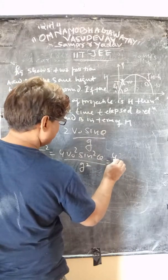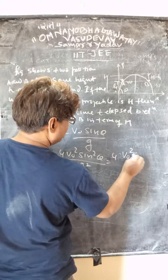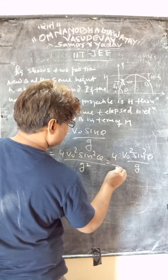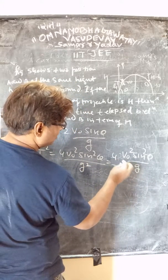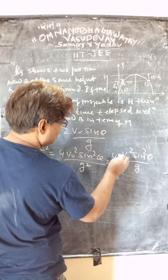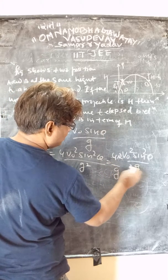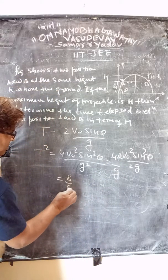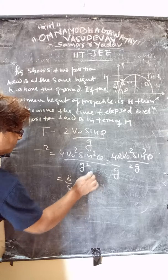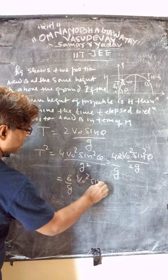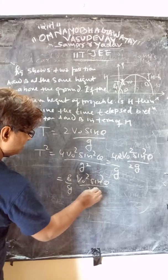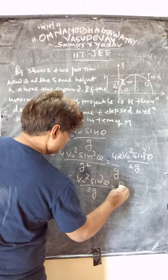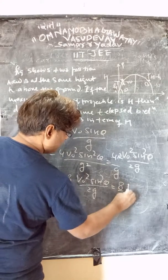We can write this as 4 into V0 squared sin squared theta upon g, divided by g. Now we multiply and divide by 2, giving us 8 upon g into (V0 squared sin squared theta upon 2g). This expression inside is the equation for maximum height, so T squared equals 8 upon g into capital H.